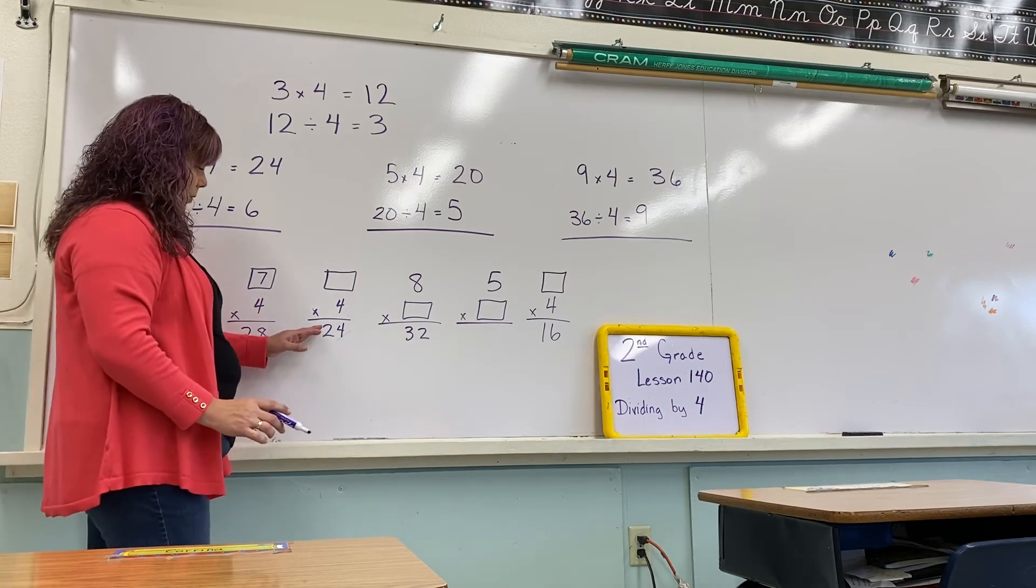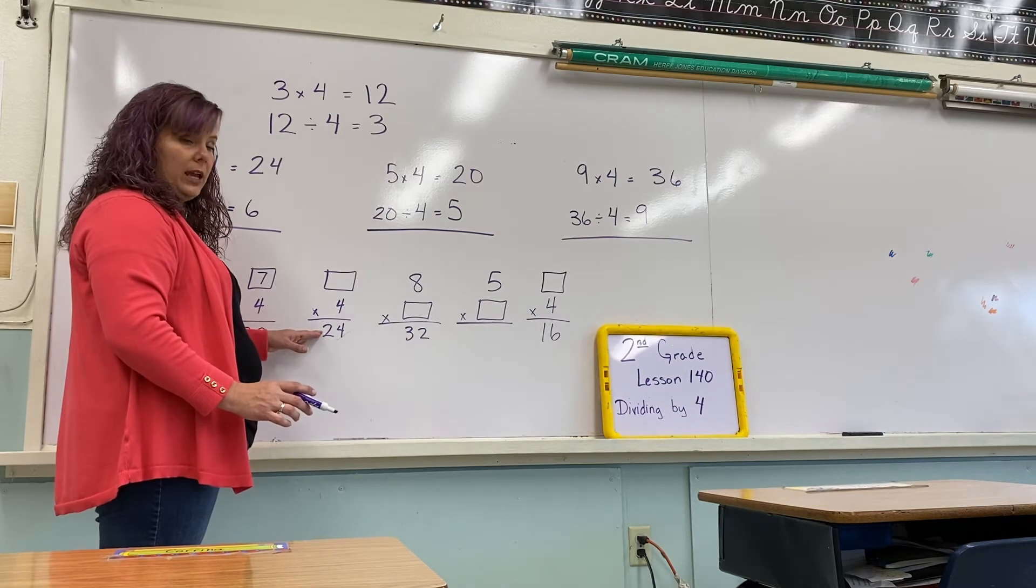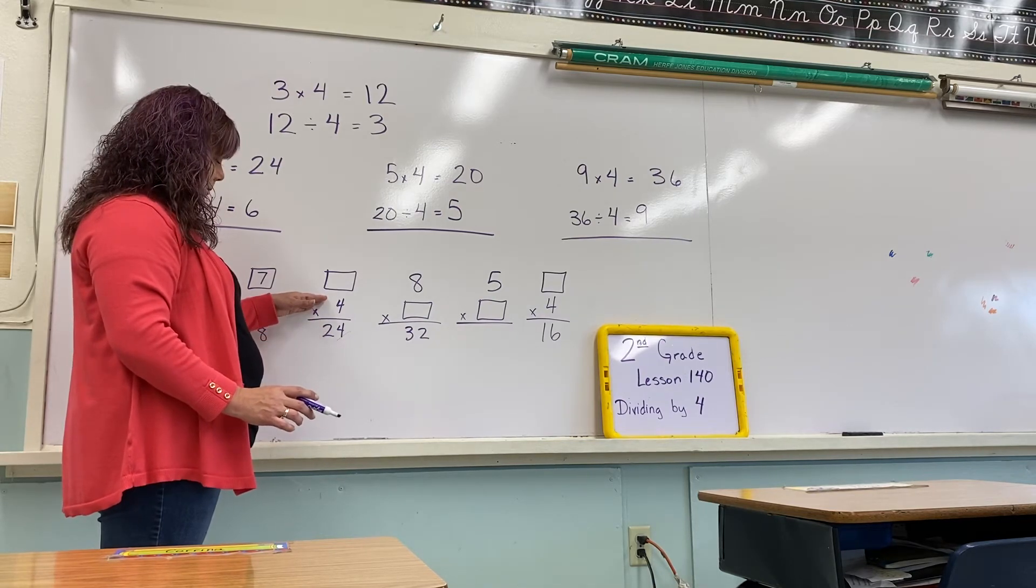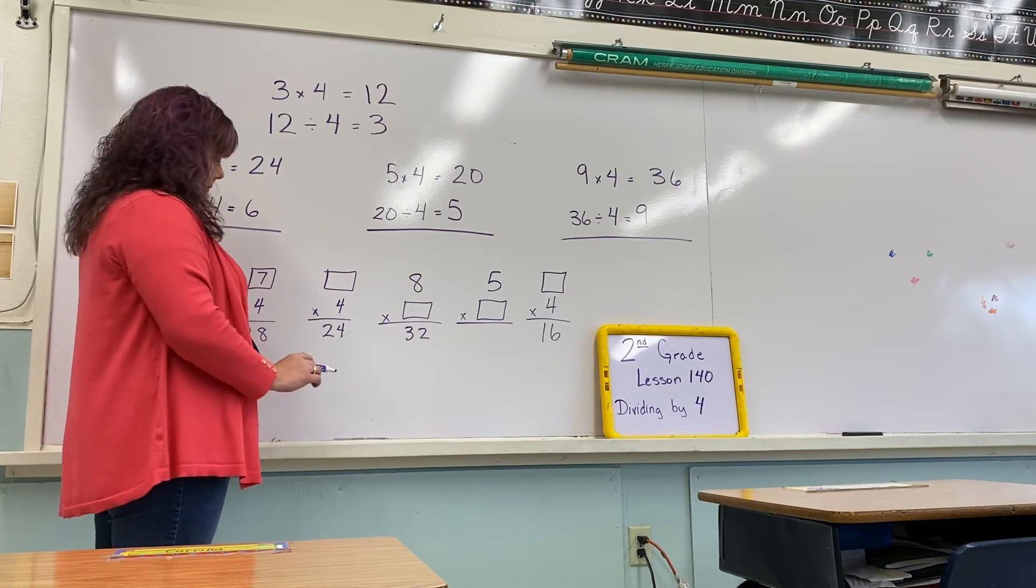Here we have what number times 4 equals 24. You could also say 24 divided by 4 is what number? Yes, it's 6.